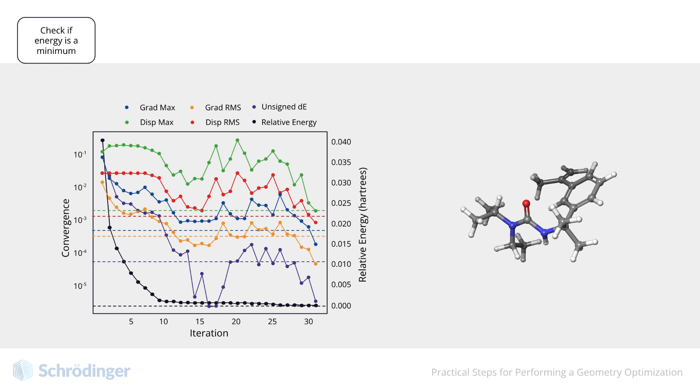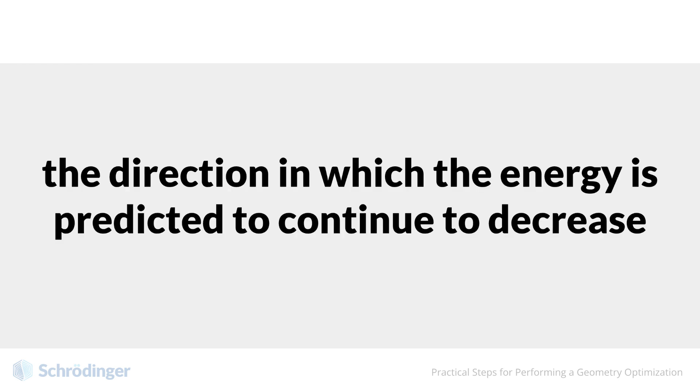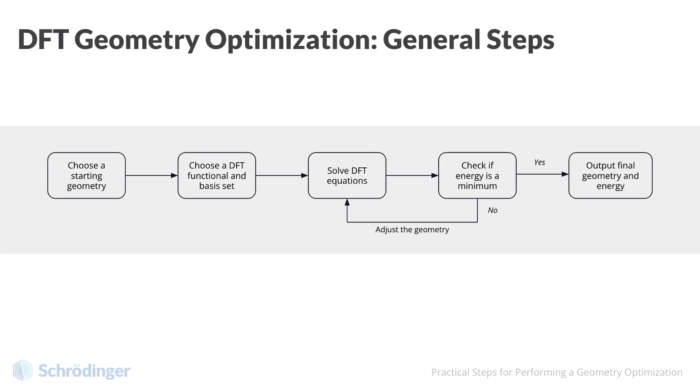If we have not reached convergence, the geometry is adjusted in the direction of the derivative of energy with respect to atomic displacements. Quantum chemists refer to this derivative of energy as the gradient. This is the direction in which the energy is predicted to continue to decrease. Actually, we calculate this derivative with respect to the displacement of every atom. Therefore, each atom in the molecule is adjusted separately. We adjust the atomic positions, and then return to solving the DFT equations for the new geometry.